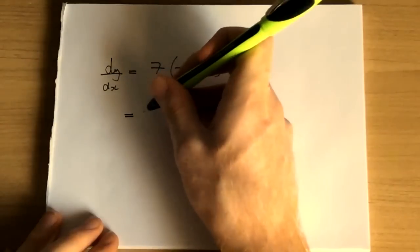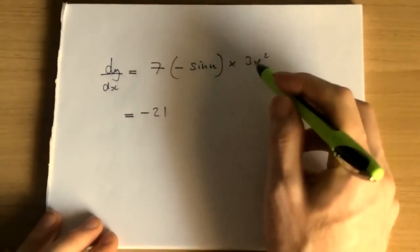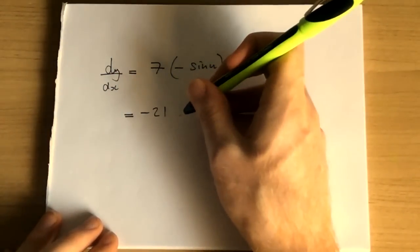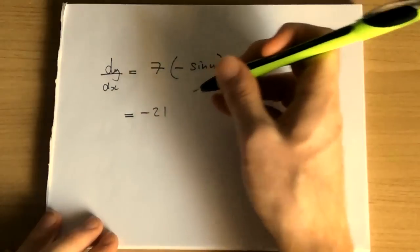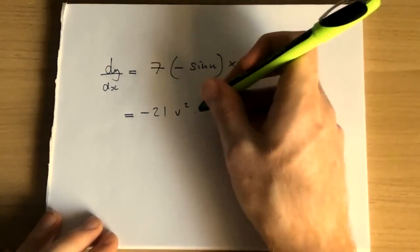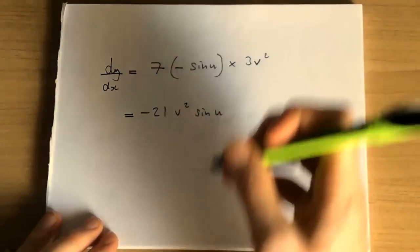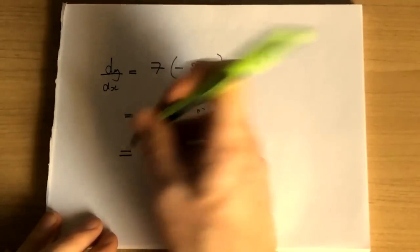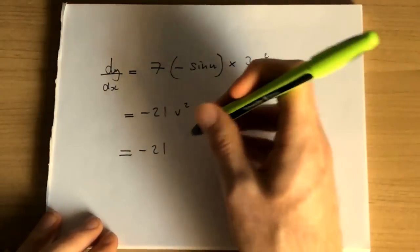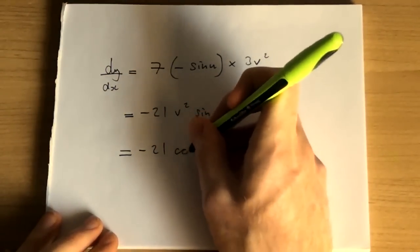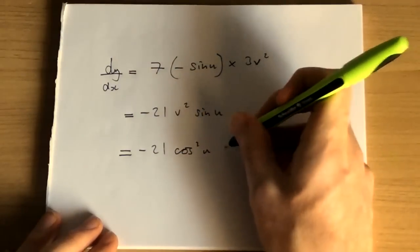This is equal to minus 21v squared sin u, which is equal to minus 21 cos squared u sin u.